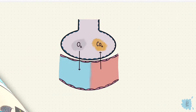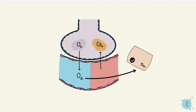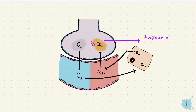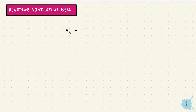Oxygen moves from the alveolar air into the pulmonary capillaries. Carbon dioxide formed from cellular metabolism moves from the capillaries into the alveolar air. The alveolar carbon dioxide can be predicted with the alveolar ventilation equation: alveolar ventilation equals the rate of carbon dioxide produced times K, a constant, over the alveolar carbon dioxide.